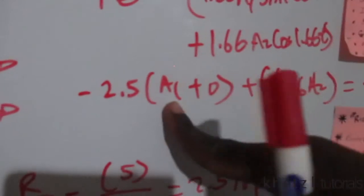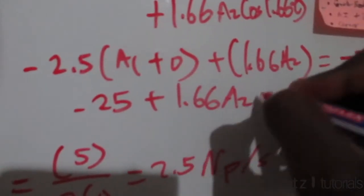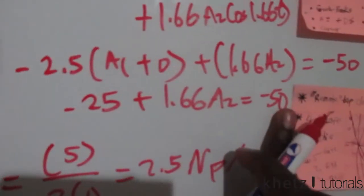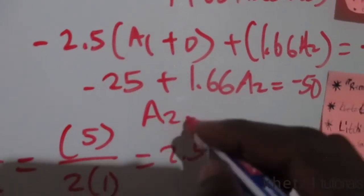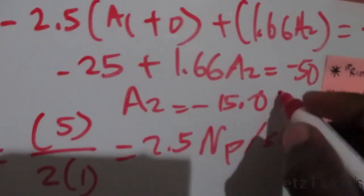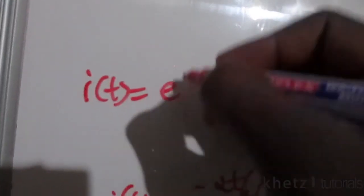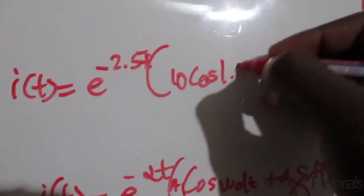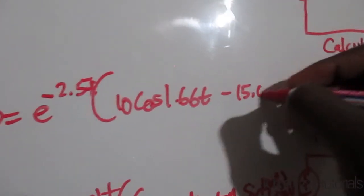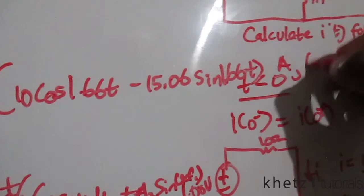Solving: 1.66 A₂ = −50 + 25 = −25, so A₂ = −25/1.66 ≈ −15.06. Now that we have both coefficients, the complete response is: i(t) = e^(−2.5t) [10 cos(1.66t) − 15.06 sin(1.66t)] amperes, for t > 0.